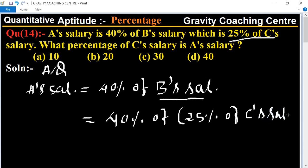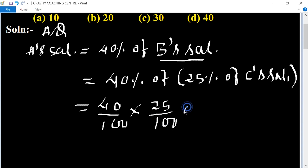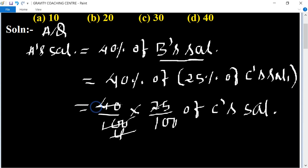So A's salary equals 40/100 multiplied by 25/100 of C's salary. That gives us 10/100, which means A's salary is 10% of C's salary.